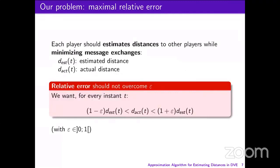More specifically, we want to have a maximal relative error. Each player should estimate the distance between him and every other player, while minimizing message exchanges. With d_est the estimated distance and d_act the actual distance, we want the relative error to never overcome a maximum we call epsilon. That is, we want to guarantee for every instant t that the actual distance remains inside (1 minus epsilon) times the estimated distance, and (1 plus epsilon) times the estimated distance. Epsilon is a given constant value inside 0 and 1.